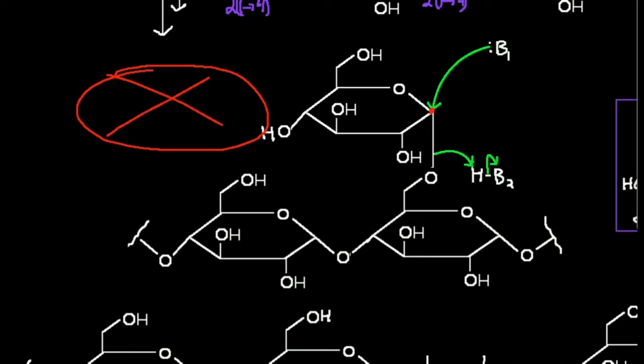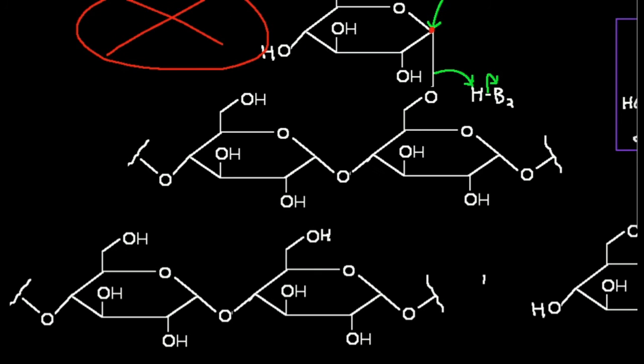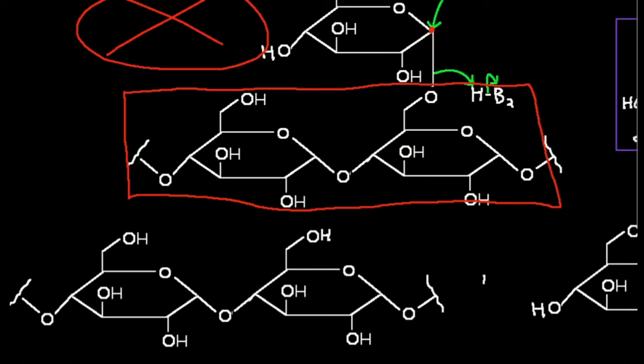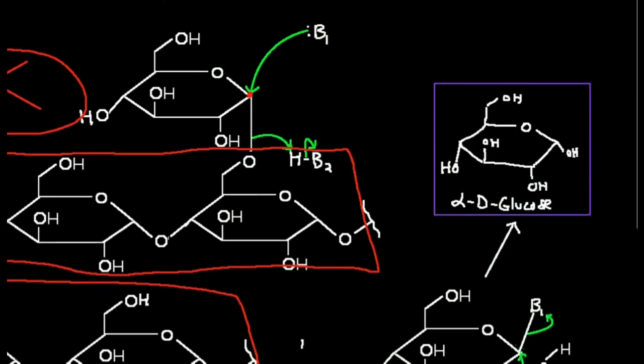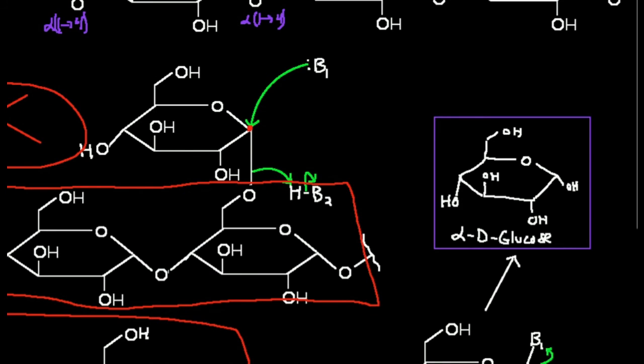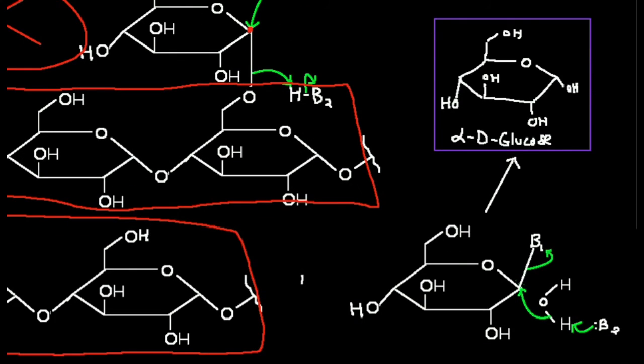So now, this glucose right here is covalently attached to base 1. And this glycogen chain right here, the part that's not the branch, the main chain, that's this down here. So now, as we saw above here, we have base 1 that's going to be covalently attached to this glucose unit that was part of the branch.